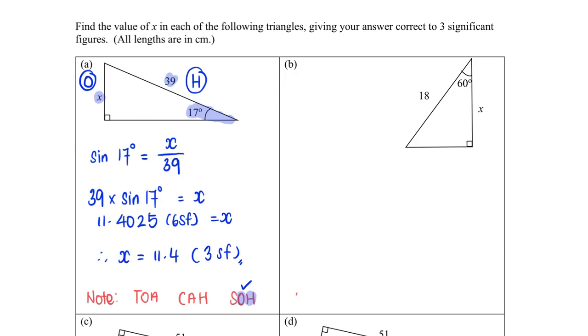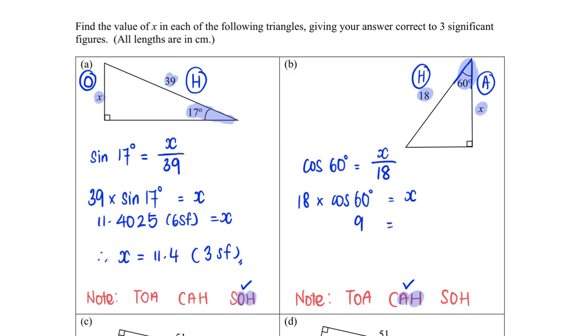Let's continue to try again. I will write down TOA CAH SOH because I am going to see which ratio I could tap on. Angle is here, 60 degrees, and with that angle, this is the longer side, H. This side here touches the angle, A. So with A and H, I am going to tap on my cosine ratio. Cosine 60 degrees equals my A divided by my H, which is 18. I'm going to multiply 18 on both sides, and this will give me a value of 9.